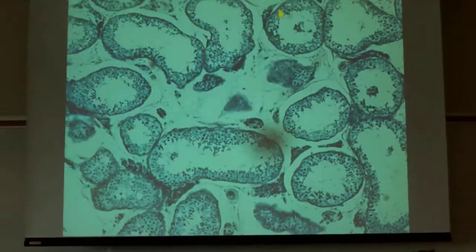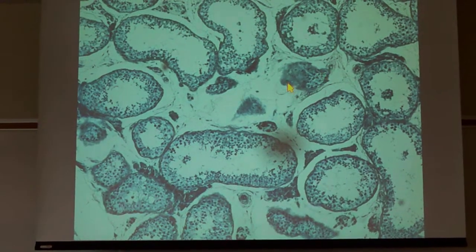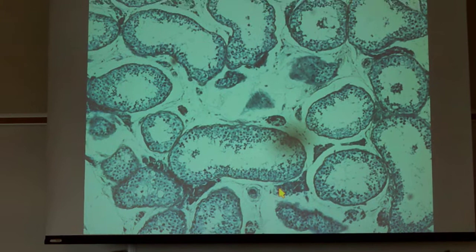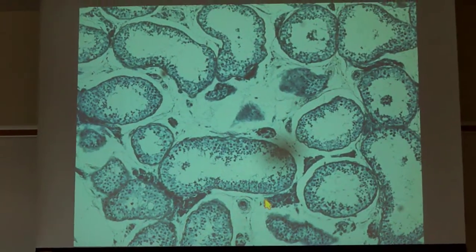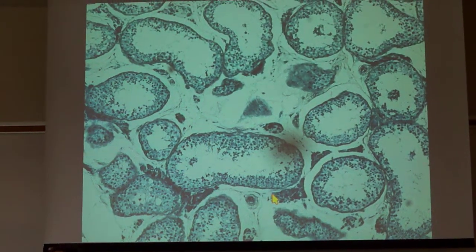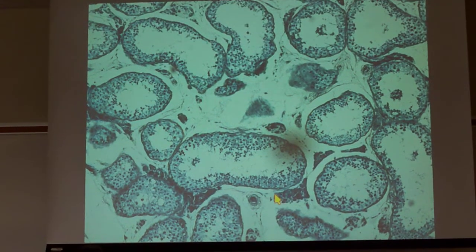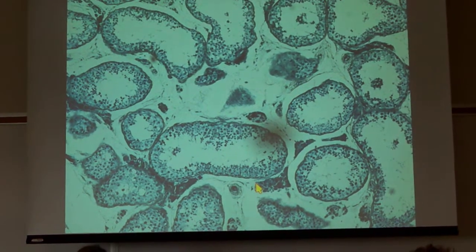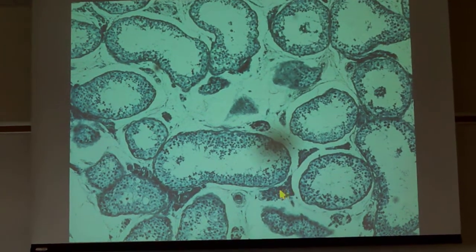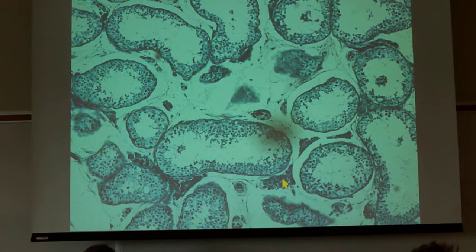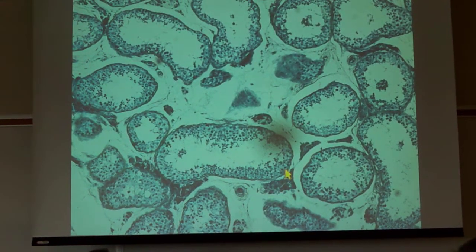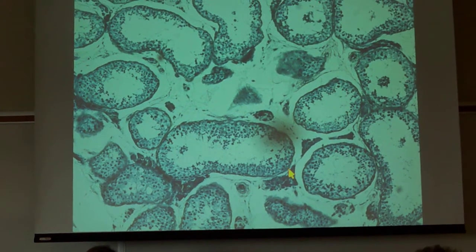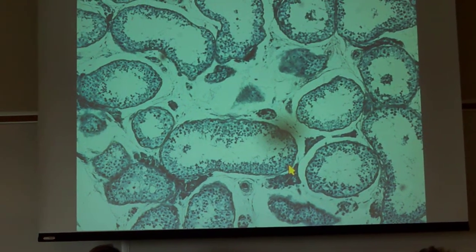So in between, here's all the seminiferous tubules. These cells in between, some of these blobs of cells in here, some of them are considered interstitial cells. Since I won't point out anything else, for your purposes, all of them are interstitial cells. What these guys do is they actually produce testosterone. So males produce testosterone outside the seminiferous tubules, then testosterone actually has its effect on the spermatogonia, causing them to increase the rate at which they produce sperm.